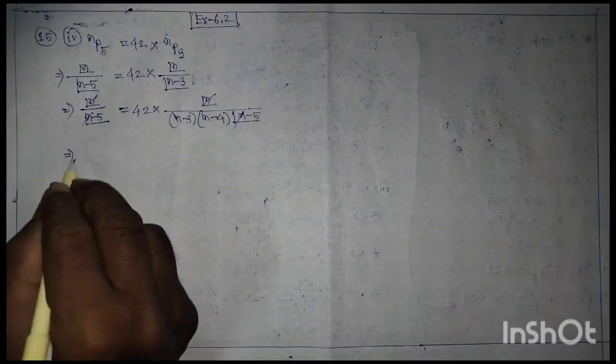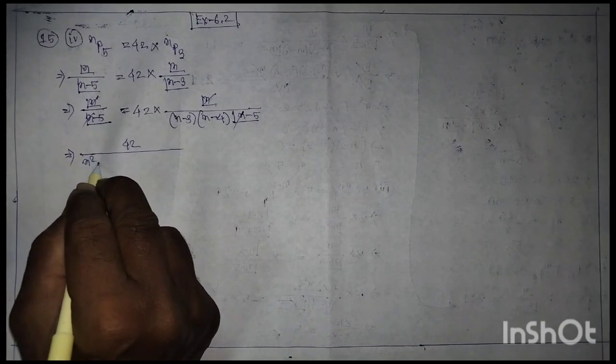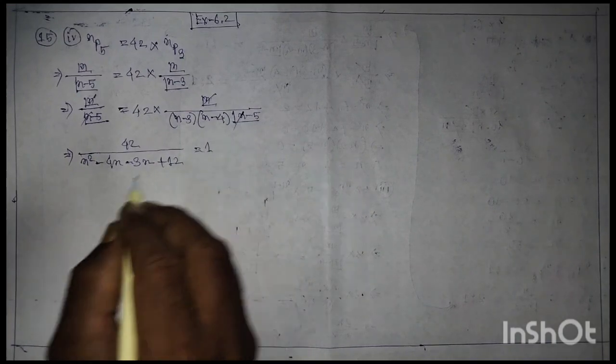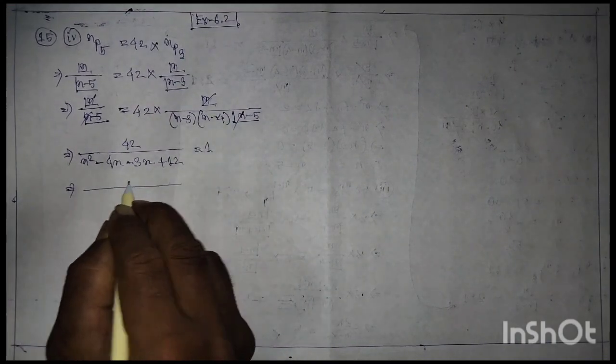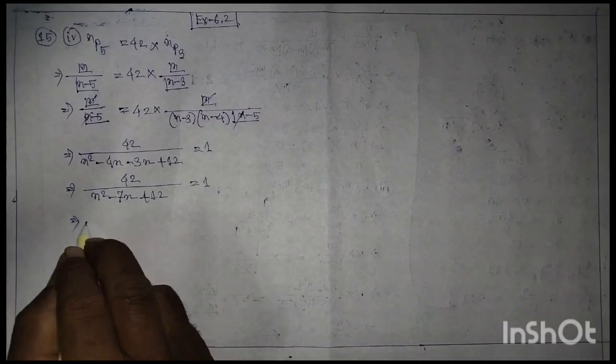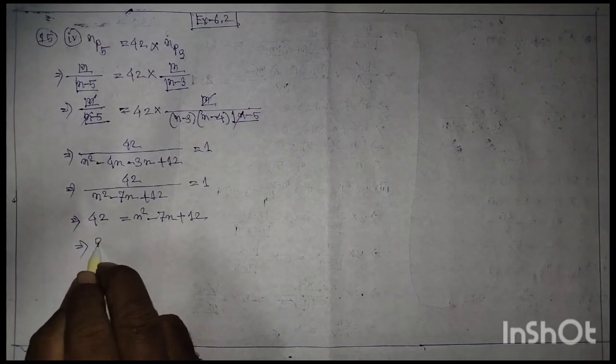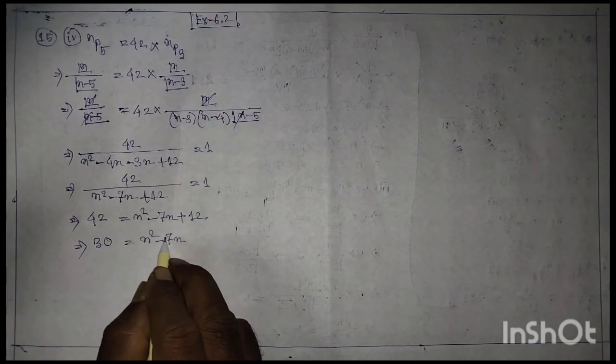Cancel terms: 42 by n² - 4n - 3n + 12 is equal to 1. And place 42(n² - 7n + 12) is equal to 1. And place 42 is equal to n² - 7n + 12. So 30 is equal to n² - 7n.